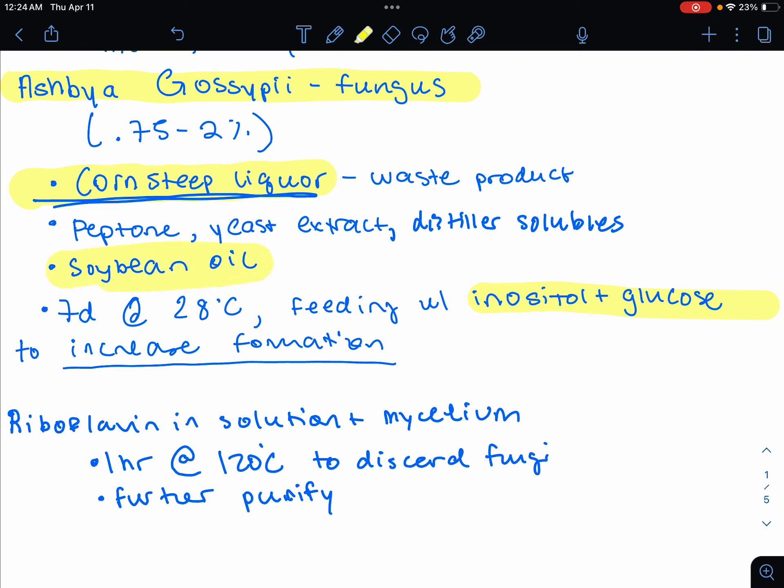This is a 7-day fermentation at 28 degrees Celsius, a little bit on the cold end, because we are dealing with a fungus. You're going to be using inositol to increase the formation rate, as well as glucose. So it's a combination of inositol and glucose to increase the formation rate.